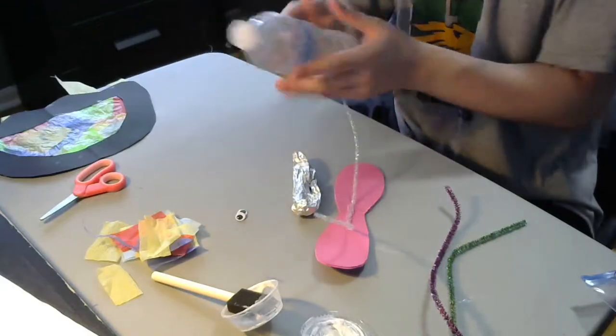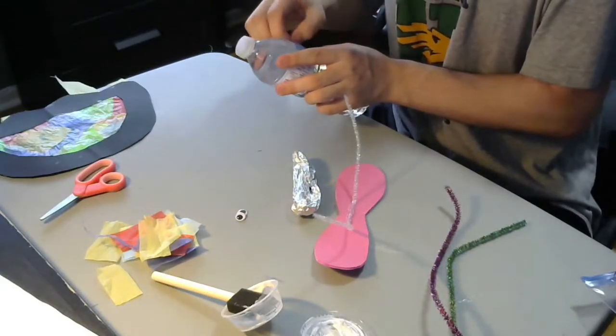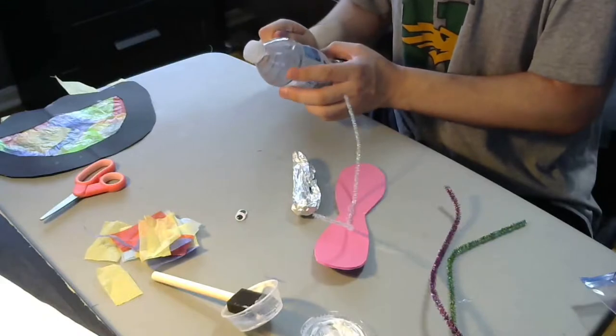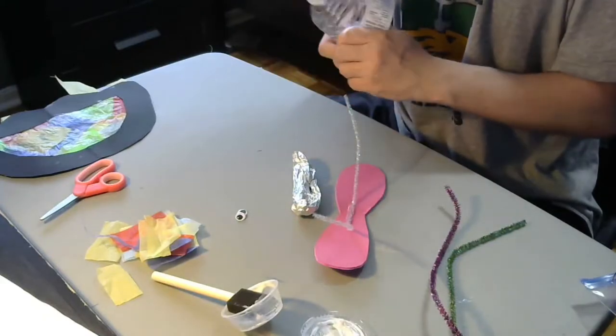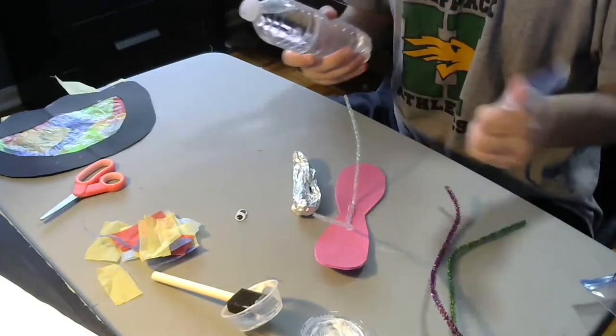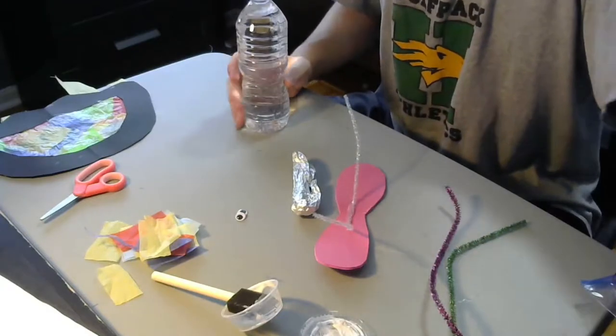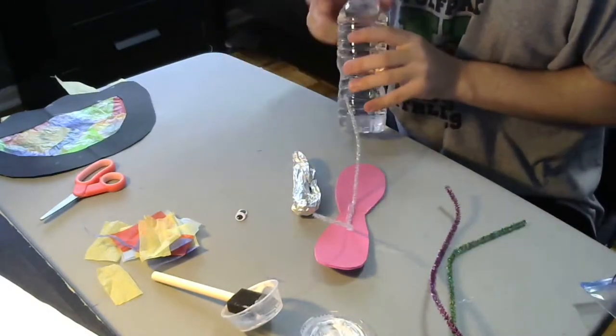First thing we want to do is we're going to want to rip off the tag of our water bottle. And this is very important. You're going to want to empty this out.